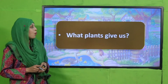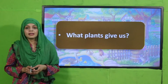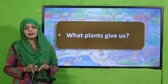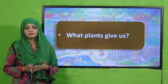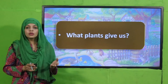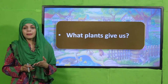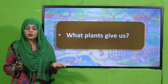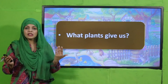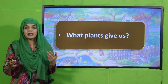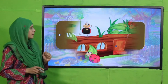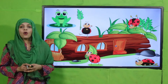Now it is the time for pre-reading questions. Listen to the questions very carefully and then answer them. What do plants give us? Plants hume kya kya dete hain? Fruits, vegetables — iske alava aapka furniture bhi ussi se banta hai. Bohut si cheezein hum plants ki lakdi se banaate hain. Very good!